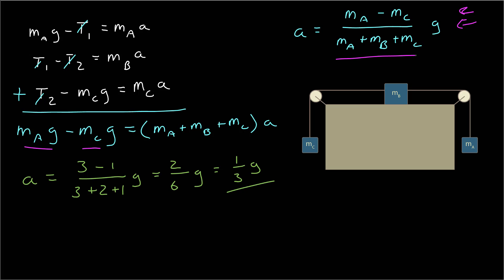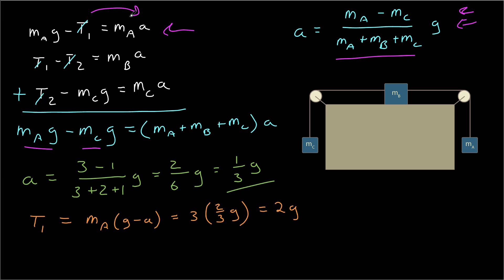Plugging in the values — mass a is 3 kg, mass c is 1 kg, and mass b is 2 kg — I get an acceleration of one-third g. To find tension 1, I rearrange the equation for mass a: t1 equals mass a times (g minus a). Since a is one-third g, g minus a is two-thirds g, giving t1 equals mass a times two-thirds g, which works out to 2 times g newtons.